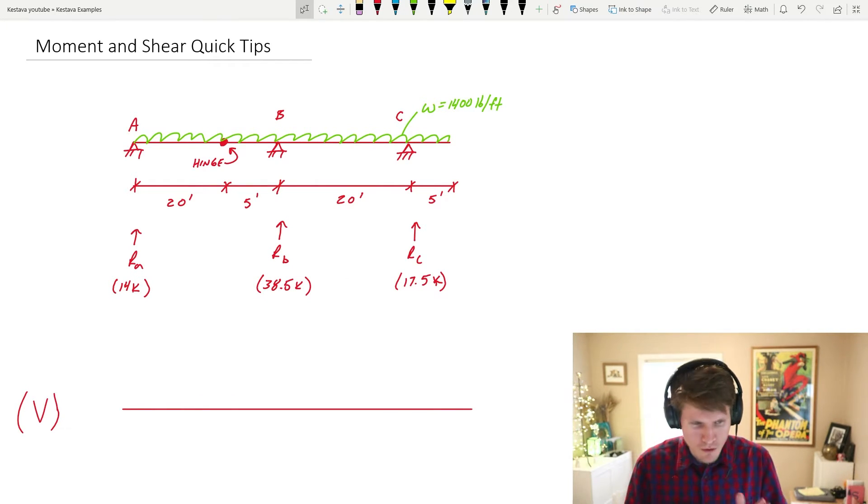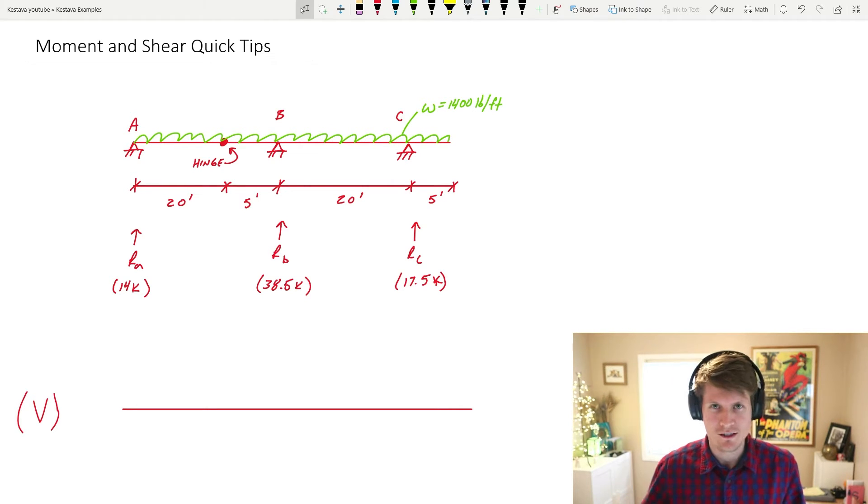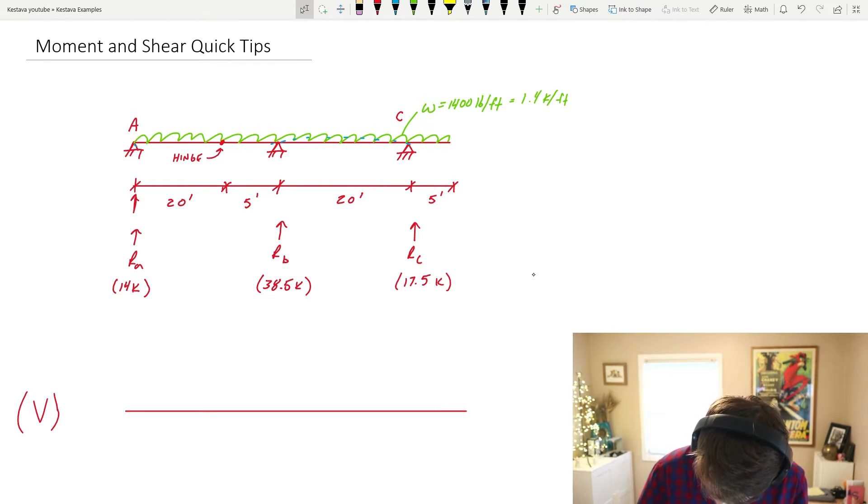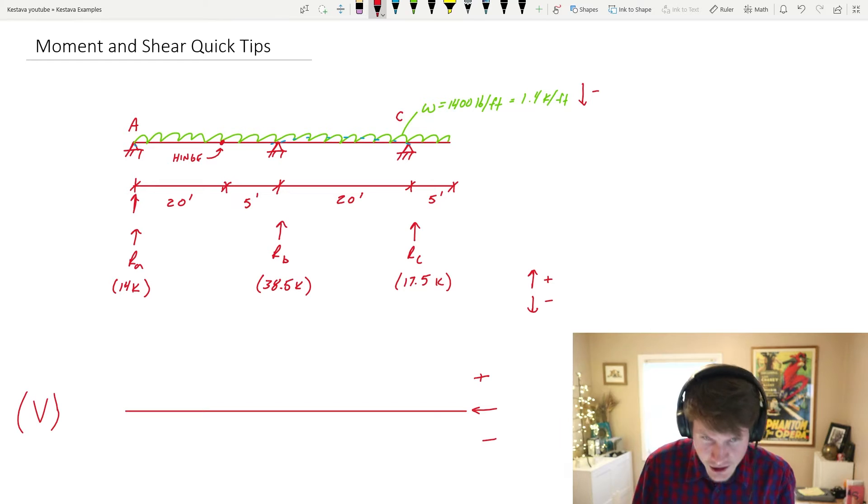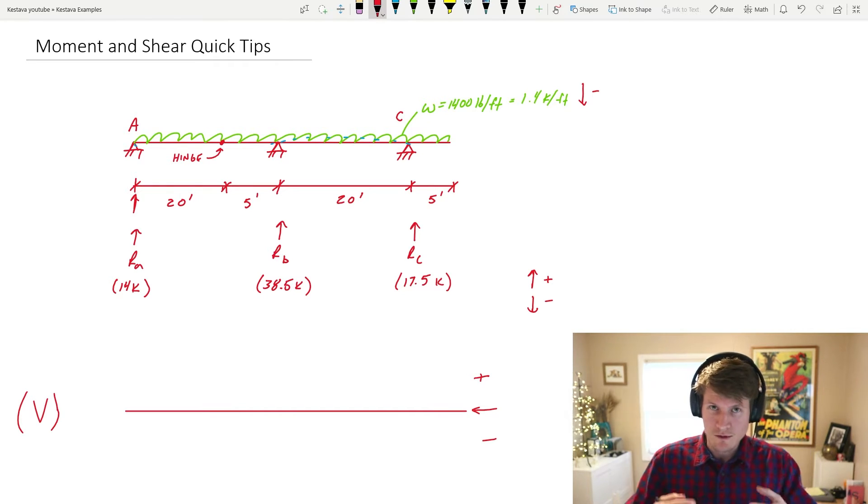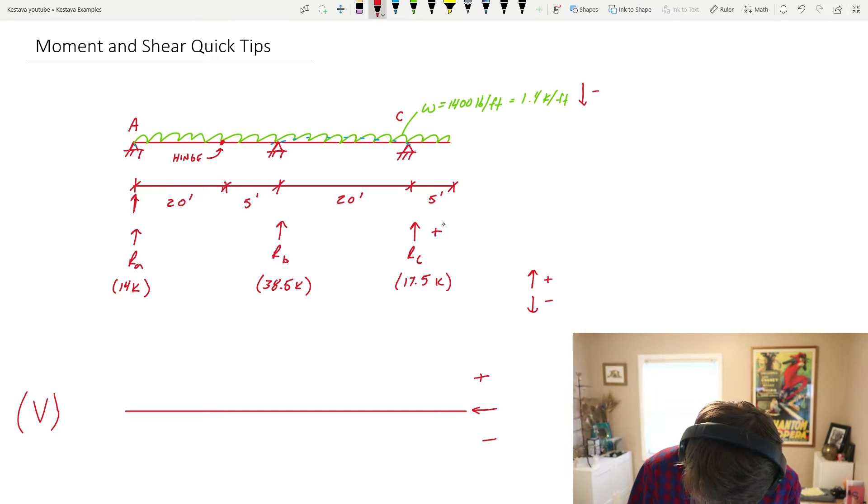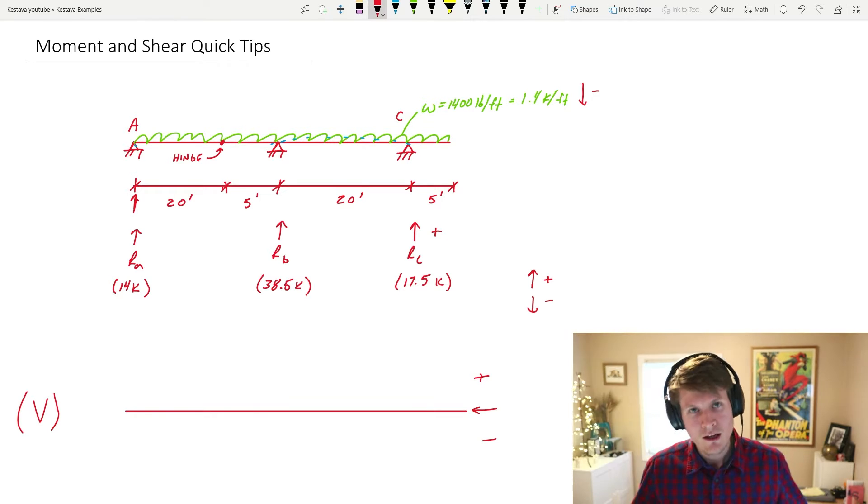Moment and shear diagram quick tips. You can go through cutting up your system, finding your moments and your shears along the way, and then taking those values and plugging it in to create your diagrams. But there are some handy intuitive tips and tricks to draw those diagrams more quickly. First of all, I just want to say that up is going to denote positive shear, which is going to be anything above this line. And below it is negative, and negative will also be determined with forces that are acting downward.